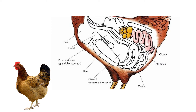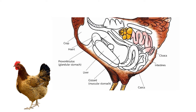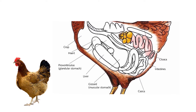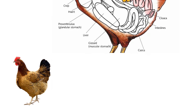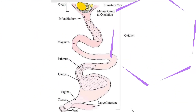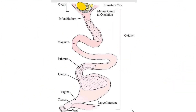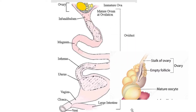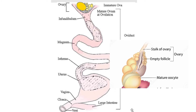The single surviving ovary is located in the laying hen just in front of the kidneys in the abdominal cavity. The ovary is well endowed with blood vessels to ensure there is no hindrance to the transport of nutrients to the developing yolk. The ovary consists of a mass of yellowish, round objects called follicles, each containing an ovum or yolk.